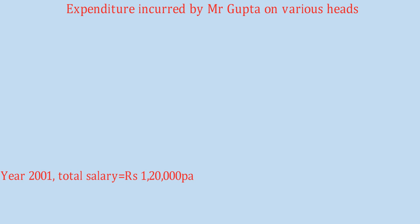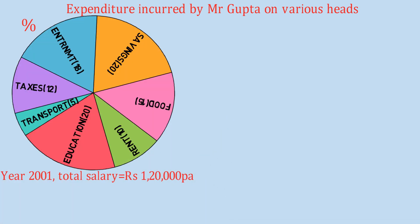Here we are going to see the expenditure incurred by Mr. Gupta on various heads. In year 2001, the total salary of Mr. Gupta is 1,20,000 per annum. The total salary is distributed as: entertainment 18%, savings 20%, food 15%, rent 10%, education 20%, transport 5%, taxes 12%.